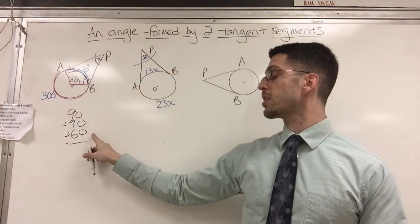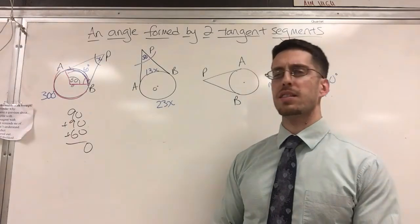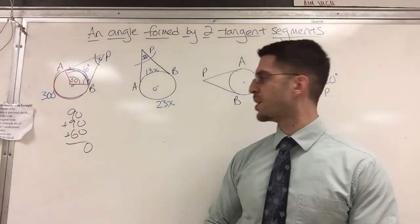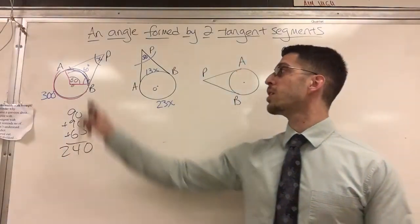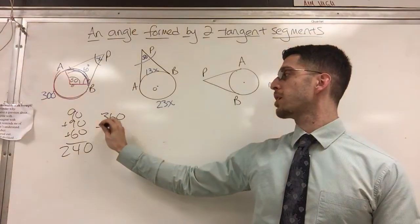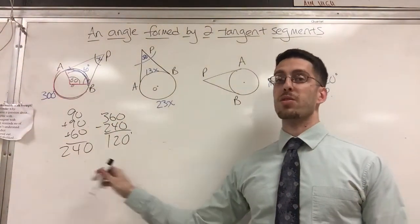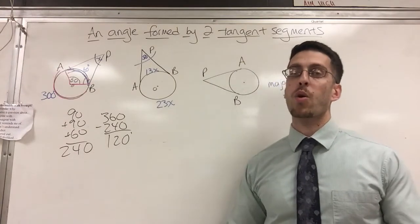180 plus 60 is 18 plus 6, what is that? 24, 240. So now I can find my missing angle. That's 360 minus 240 is 120. Look at that, you got the same answer. So there's a couple of ways to get that answer. Whatever works for you.